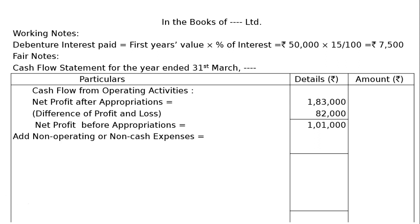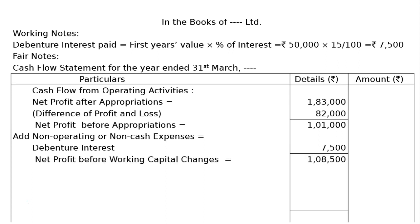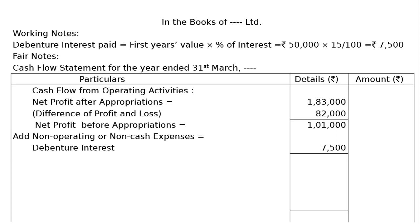For example, debenture interest — we will pay it in cash, but it is not a business operating expense; it is a financing expense because we borrowed money and are paying interest on it. After adding this back, we get ₹1,08,500 as net profit before working capital changes.